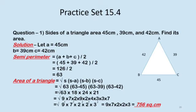Square root means squares, right? So which is equal to 9 into 7 into 2 into 2 into 3. After multiplying you will get 756 square centimeter. The unit will be square centimeter because we are finding out the area.